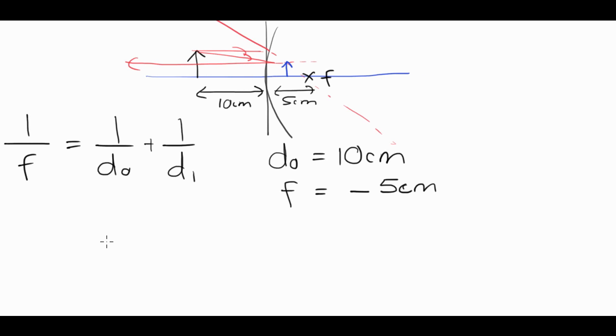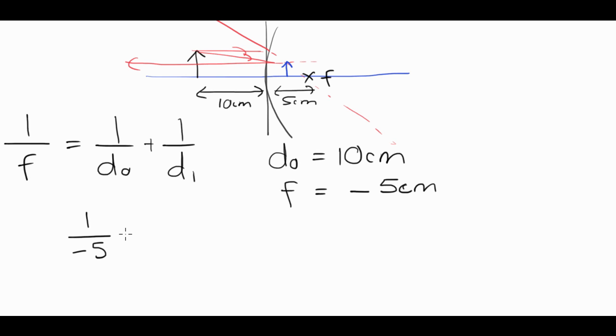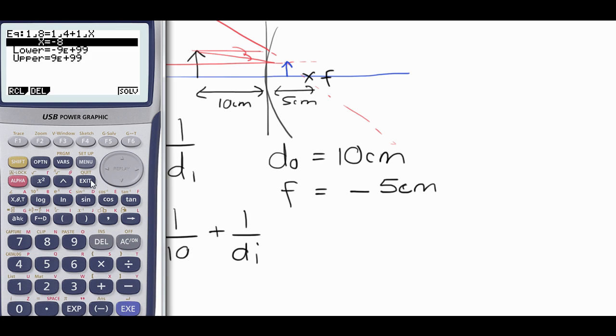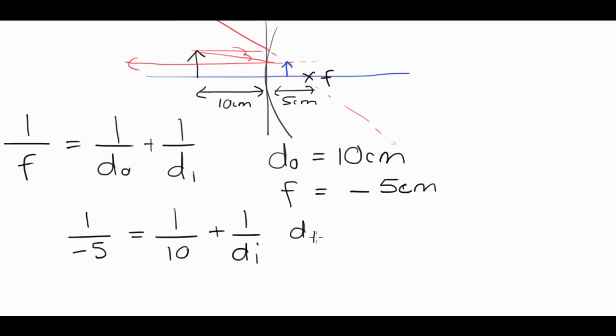We then put numbers into the equation. Okay, so looking at this, 1 divided by negative 5 will be equal to 1 divided by 10 plus 1 divided by di. All right, we want to chuck that information into solver. So, what was it? 1 over negative 5 is equal to 1 over 10 plus 1 over x. Chuck that in. Out comes our number, negative 3.3. So di is equal to negative 3.3 centimeters.